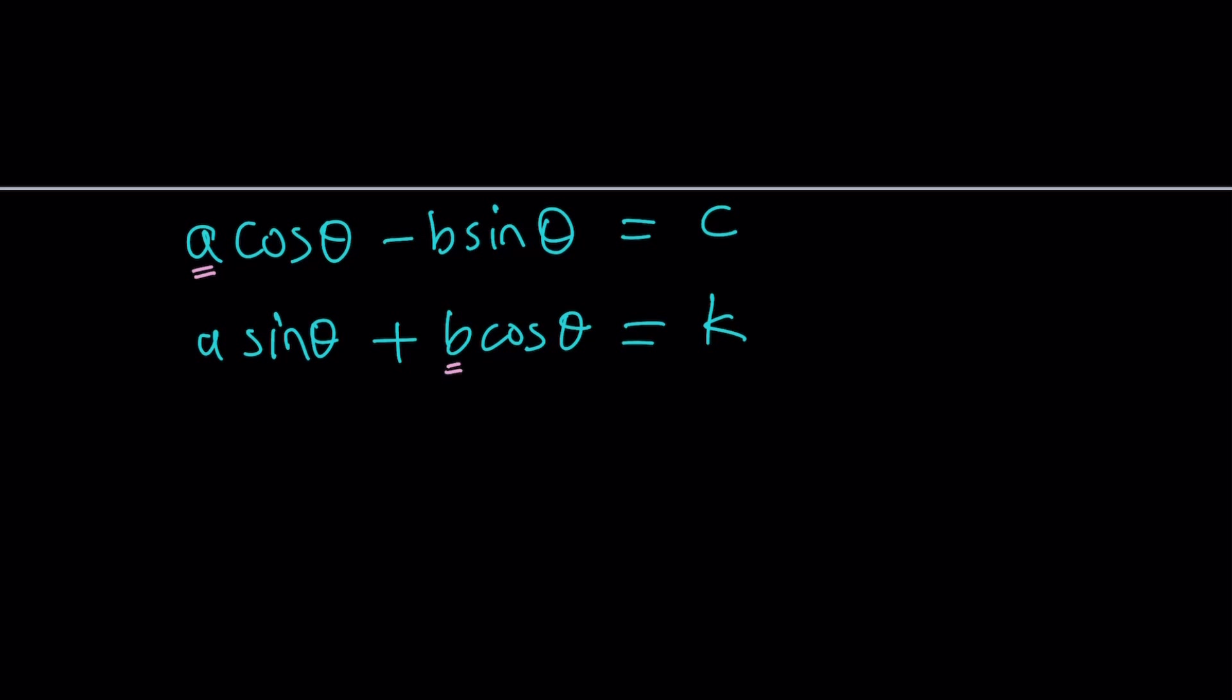So we're going to use that general strategy of squaring both sides for both of these equations. Let me square the first one, both sides, and then we're going to do the second one. The first one is going to give us a squared cosine squared theta plus b squared sine squared theta minus, be careful about the minus sign, 2ab cosine theta sine theta equals c squared.